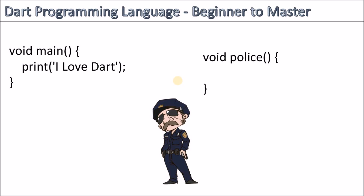If the police officer was a function, it would start with void, meaning the police officer will return nothing. If you're new to programming, this concept is difficult to understand for now, but don't worry. Just remember to start by writing void for now. You'll dig deeper into functions and understand all of this later. But for now, start with void. Then after void you have the name of the function — here you have 'police.' The parenthesis shows that this is a function we are dealing with.